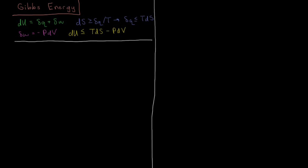In this video we're going to look at the Gibbs energy and the conditions for a spontaneous process which occurs at constant temperature and constant pressure. From the first law of thermodynamics, the differential of internal energy is dq plus dw. From the second law, the change in entropy dS is greater than or equal to dq divided by T, and therefore the heat is less than or equal to TdS. We also know that the differential of work is minus PdV, the external pressure times the change in volume of the system.